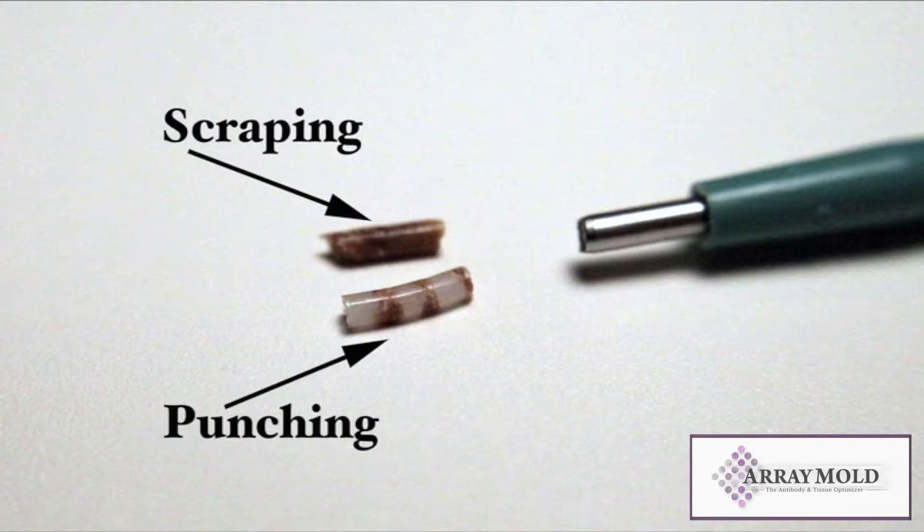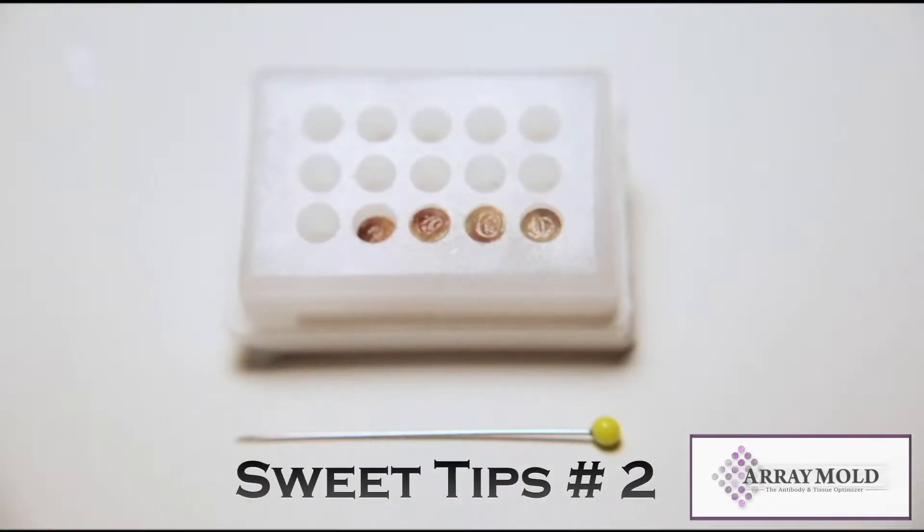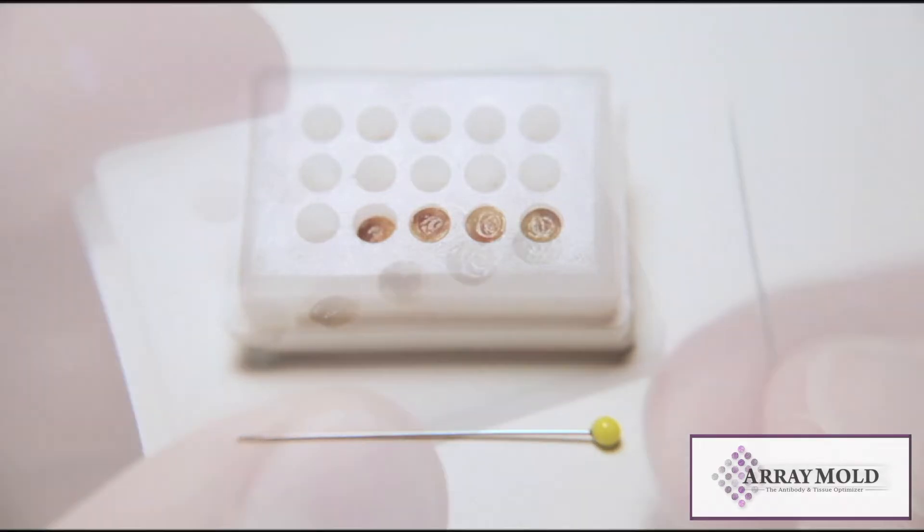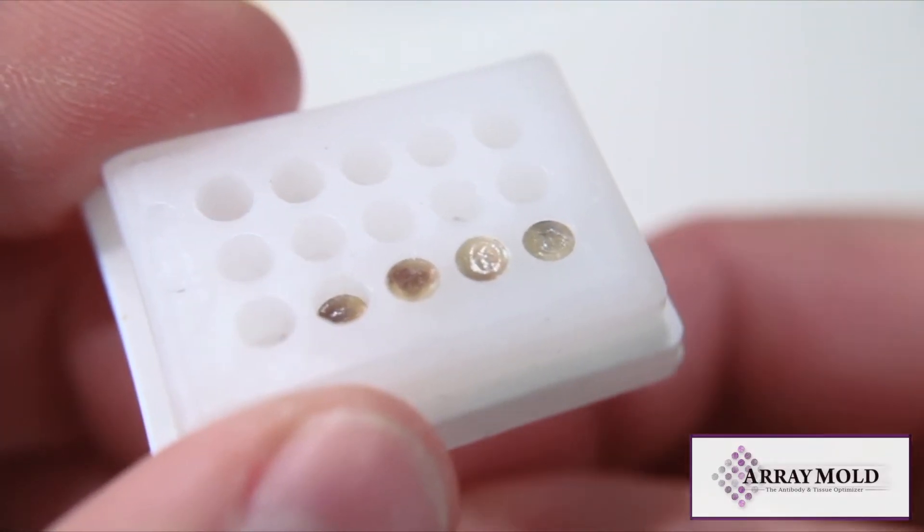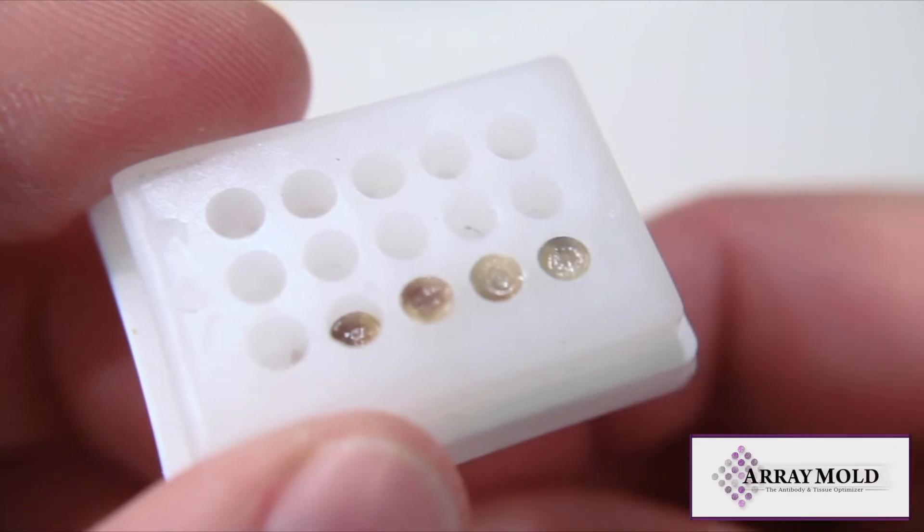The next technique we are covering is called the push-up technique. This is very helpful when a core has fallen inside of your array mold block. Using a sewing straight pin, place the pin on the back side of your array mold paraffin block.